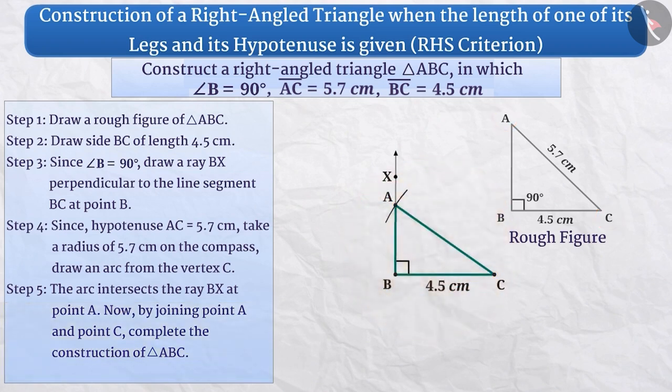In this way, we have completed the construction of triangle ABC in which the measure of angle B is 90 degree, the length of the hypotenuse AC is 5.7 cm and the length of the side BC is 4.5 cm.